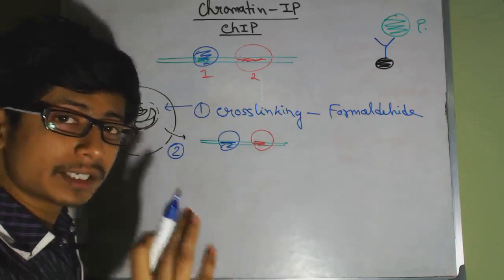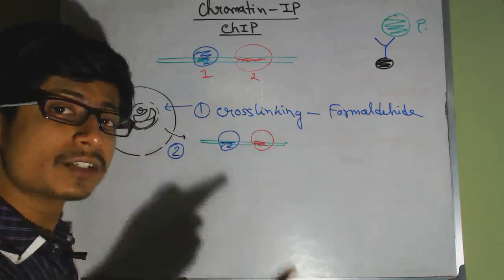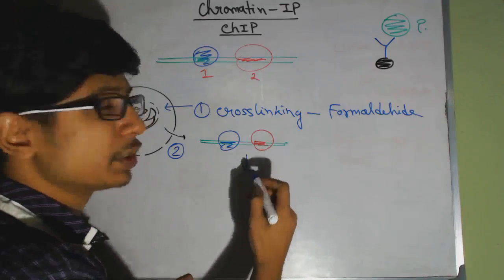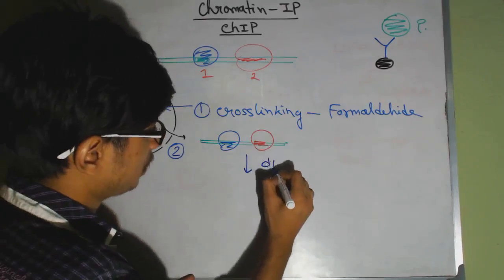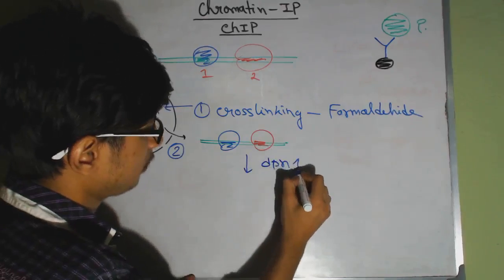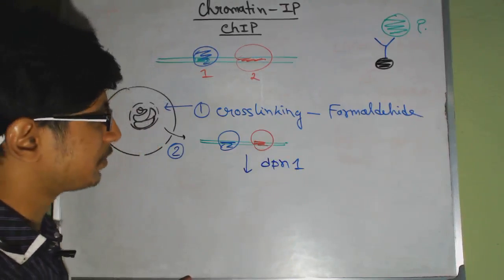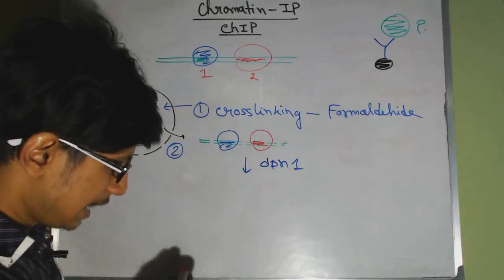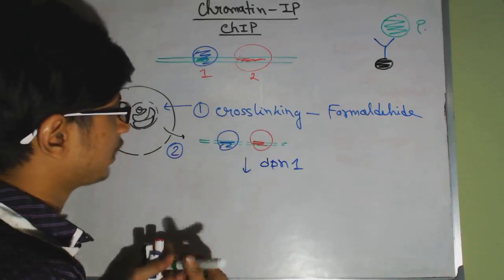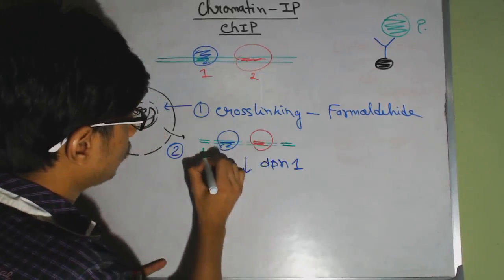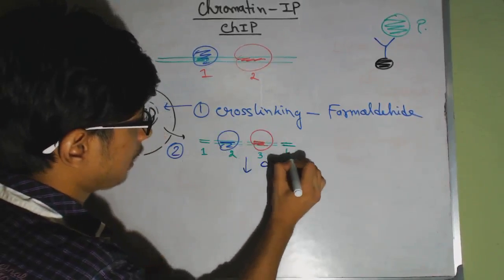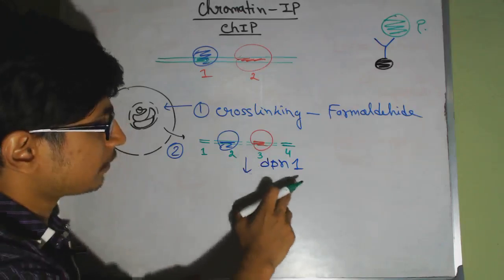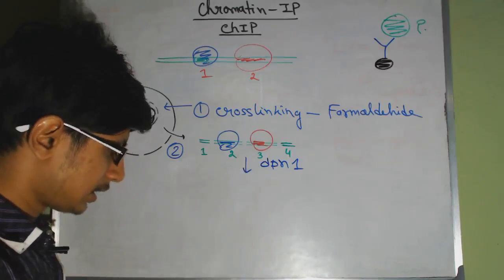The third stage is the lysis of the DNA itself. We treat it with a specific endonuclease enzyme — DpnI — which will break the DNA down from different regions. Let's say it breaks the DNA down into four different fragments: fragment one, two, three, and four. So this is the third stage of the process.